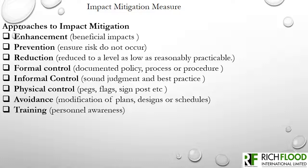Impact mitigation measures involve the preferred mitigation measures developed for identified impacts. These measures are grouped into three strategies: prevention, reduction, and control. The following are the approaches to impact mitigation.